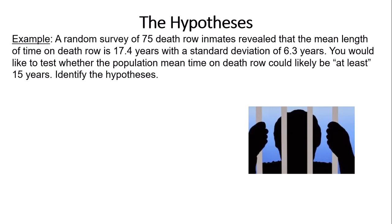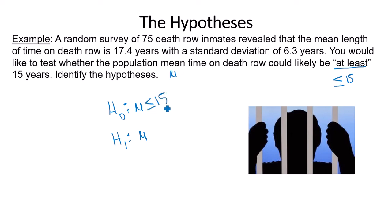Similar example with the same survey data, but now you test whether the population mean time on death row could likely be at least 15 years. 'At least' means less than or equal to 15. Since less than or equal to includes equality, it goes with the null hypothesis: H₀: μ ≤ 15. The opposite of less than or equal to is greater than, so Hₐ: μ > 15.